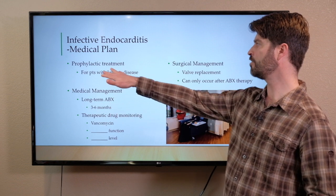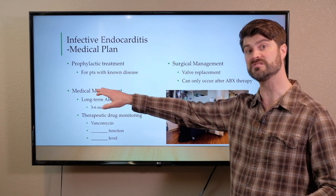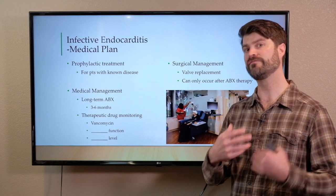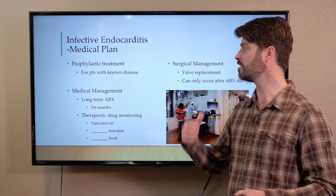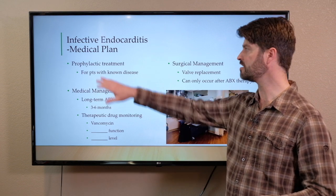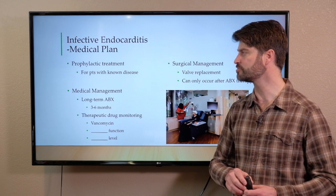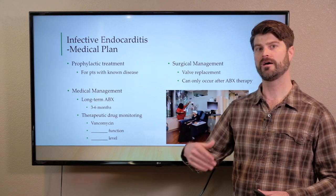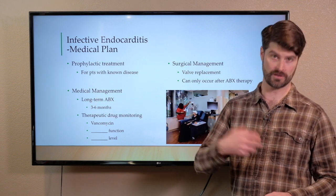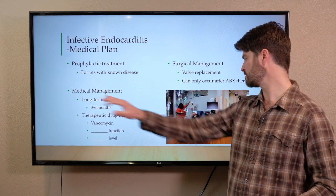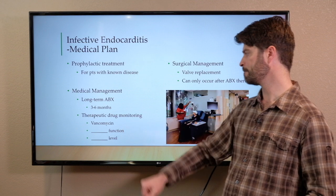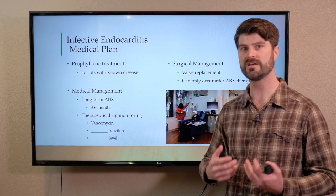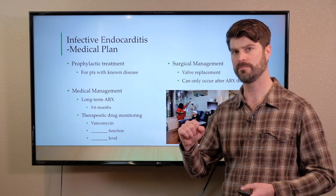For the medical plan, prophylactic treatment is a big deal for patients with known disease. So for patients who have a valvular disorder, giving them antibiotics prior to having dental work would be an example of prophylactic treatment. For patients with active infective endocarditis — active bacterial growth on the heart valve — long-term antibiotics are used, so three to six months. We give really severe, potent antibiotics for this type of infection.